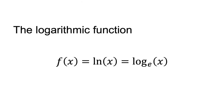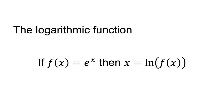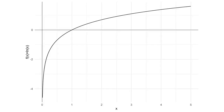The logarithmic function is written as f of x equals ln x, or log to the base e of x. The logarithmic function is the inverse of the exponential function — that is, if f of x equals e to the power of x, then x equals ln of f of x. A plot of the logarithmic function is shown here. Note that the logarithmic function is only defined for positive values of x; the logarithm of 0 is undefined.